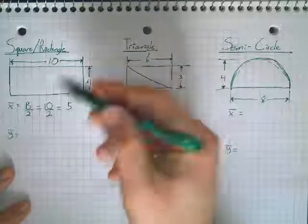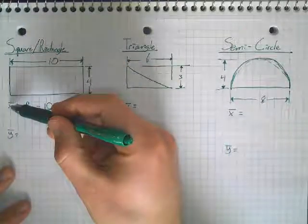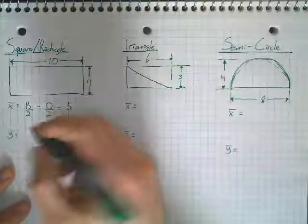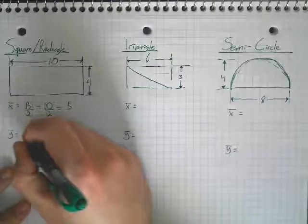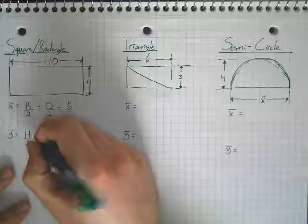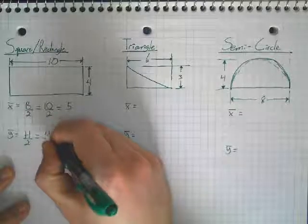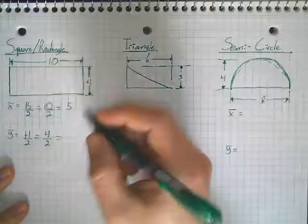And once again, make sure you're labeling our centroids as x bar and y bar. So, for y bar, it's our height divided by two. So, if we plug in, four divided by two is equal to two.